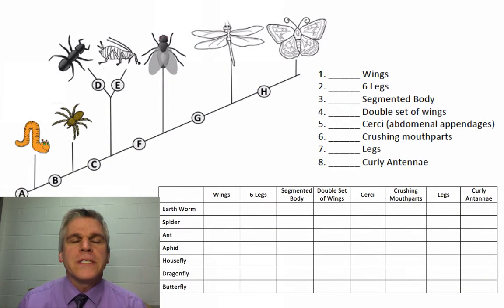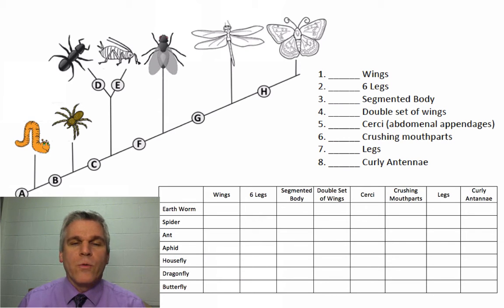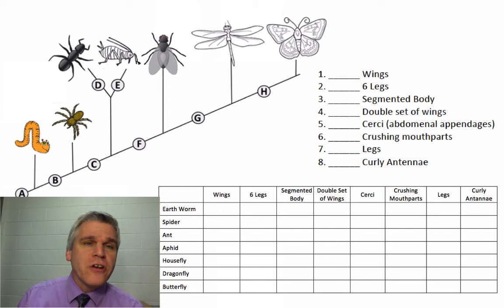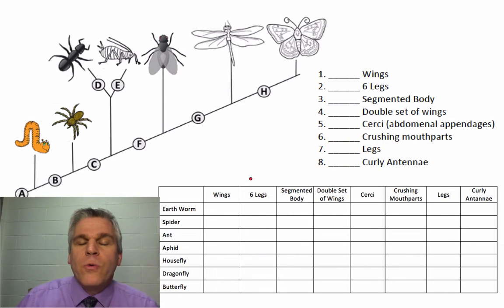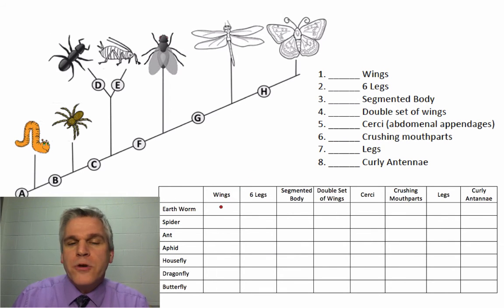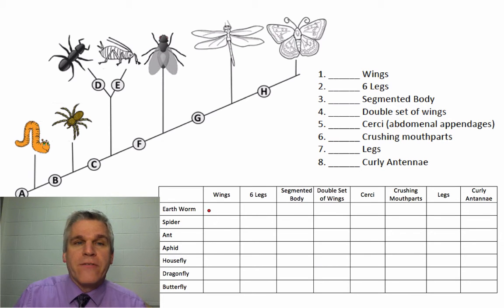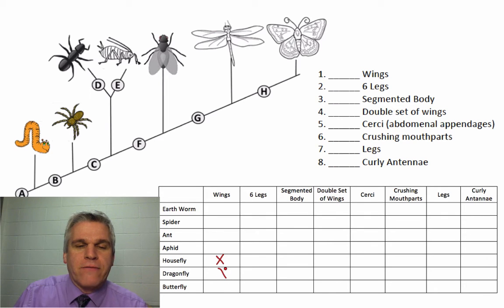Here we see a cladogram and an empty table, and we're going to fill out this table based on the cladogram. Let's start by just looking at the pictures of the animals here. Starting with wings, we're going to put an X in the box that shows the animals that have wings — and it looks like it's just going to be the housefly, the dragonfly, and the butterfly.